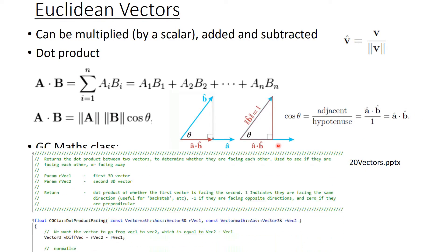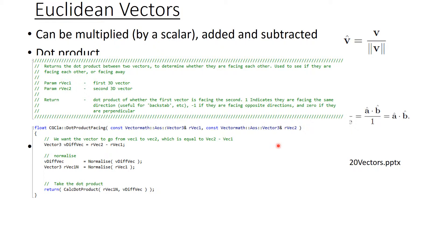I actually made a maths class for this module. So this, for example, is a function that uses a dot product to determine if two vectors are pointing in the same direction.